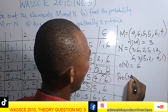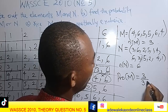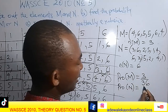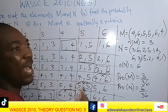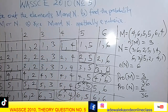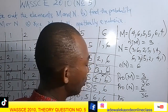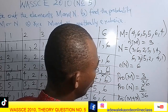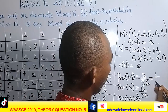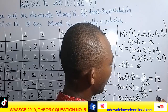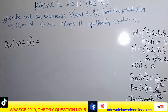The probability of M is 3 out of 36, which simplifies to 1 out of 12. The probability of N is 6 out of 36, which simplifies to 1 out of 6. The question asks for the probability of M or N, which means P(M) plus P(N).